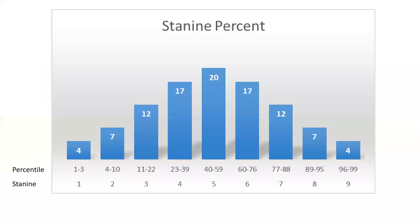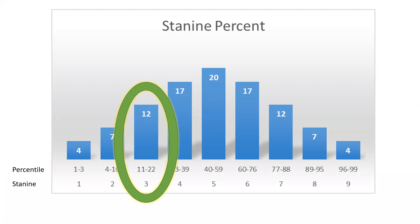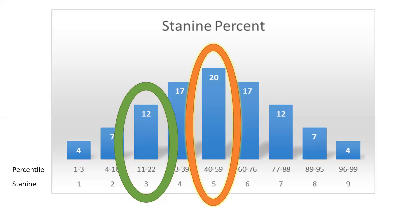This chart shows how stanines are broken down into 9 parts. Each percentile rank is broken into a range and divided into one of the 9 stanine groups. The numbers on the bars — 4, 7, 12, 17, 20, etc. — are the percentage of students whose score falls into each stanine. For a stanine of 3, 12% of students will fall into that category based on a percentile rank between 11 and 22. Compare that to stanine 5, which has 20% of the students and a percentile rank between 40 and 59.